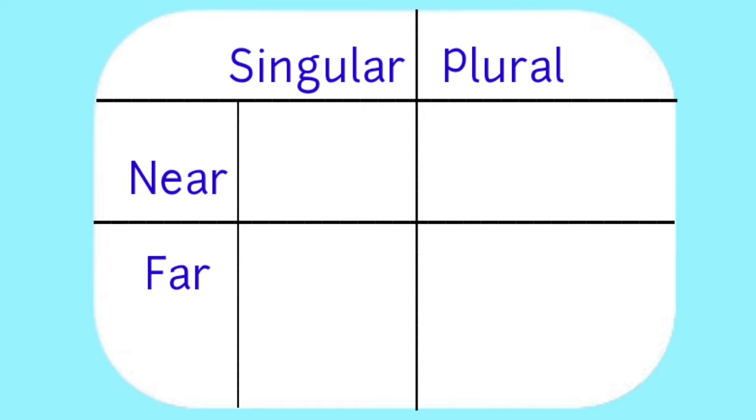Children, look at this box. Always remember that, in singular noun, if a single object is near to us, we use this. And if a single object is far from us, we use that.